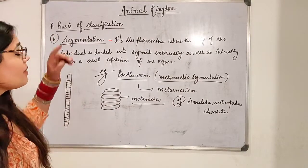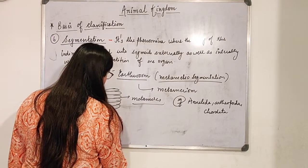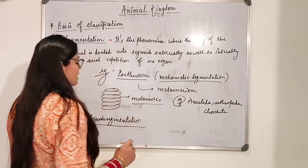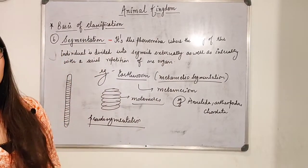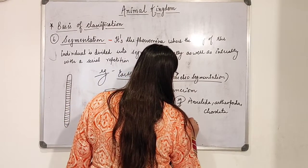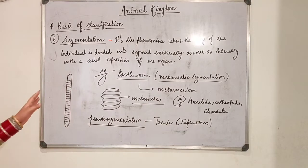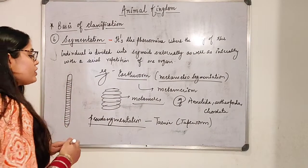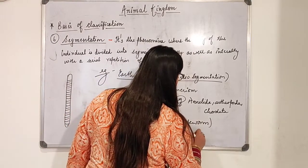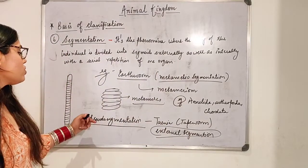There are some organisms which also show pseudo-segmentation. Pseudo means false, so pseudo-segmentation means a false segmentation is shown — it is not actually there. The example is Taenia solium, that is the tapeworm. In tapeworm, you can see that segmentation is shown, but it only shows external segmentation. There is no internal segmentation shown, and that is why it is known as pseudo-segmentation.